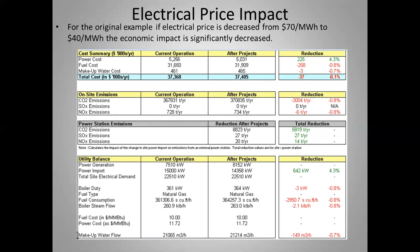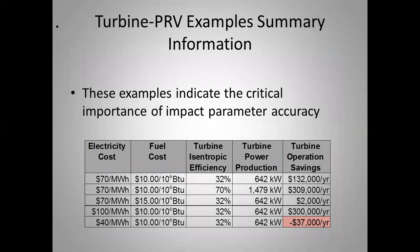Decreasing electricity price to $40/MWh with fuel at $10 results in a $37,000 loss — you definitely wouldn't do this with expensive gas and cheap electricity. Summarizing the cases: all used 32% isentropic efficiency except the second case at 70%, which showed its large impact. The other scenarios varied fuel price and electrical cost, demonstrating how sensitive the economics are to these parameters.